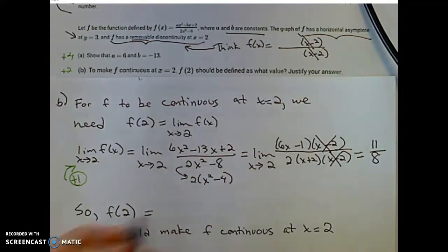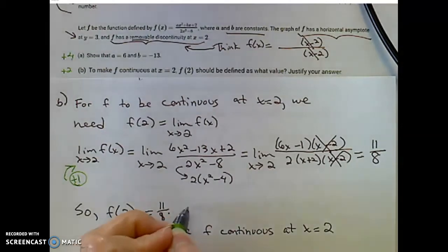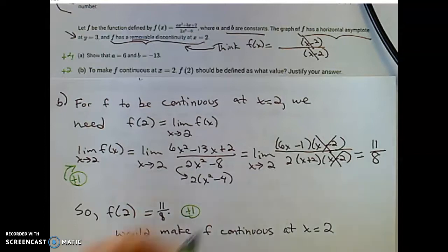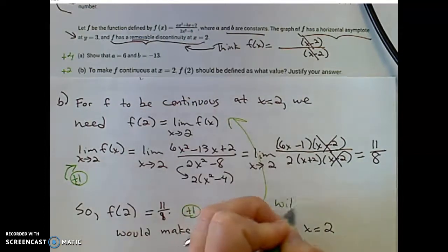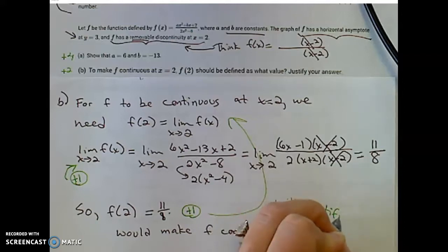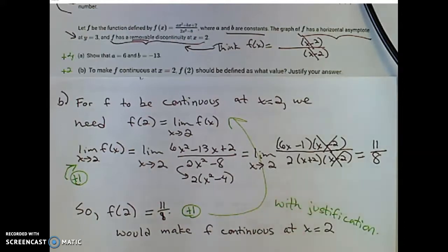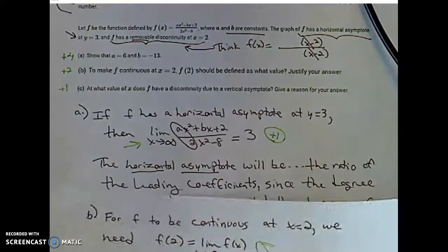And that limit as x approaches 2 of that function is equal to 11 eighths. So f of 2 equal to 11 eighths would make f continuous at x equals 2. You got a point for this answer with justification. So you need that calculus explanation as well. Don't be discouraged if your solutions did not look like this. We have weeks to improve on our explanations, our justifications. There's the two points for part B. We're improving our skills over the next couple weeks and we have some time to do it.